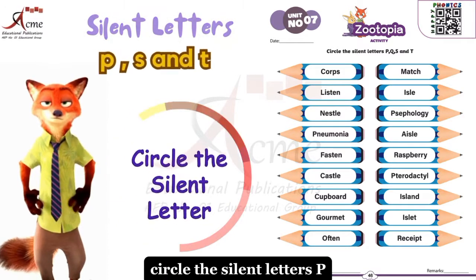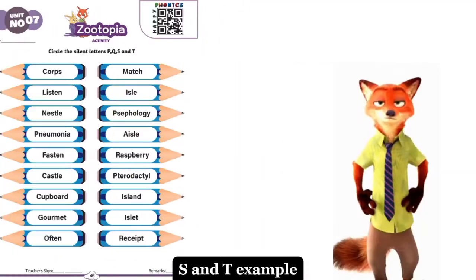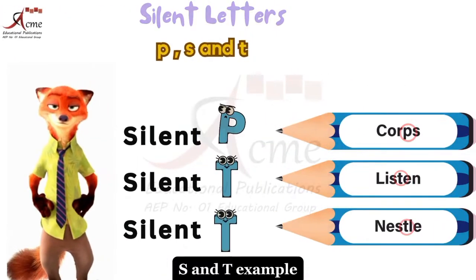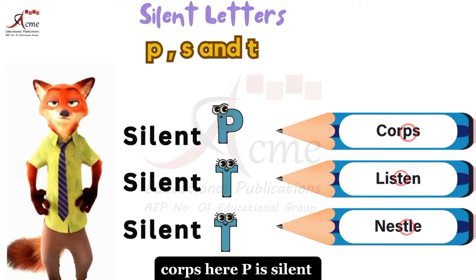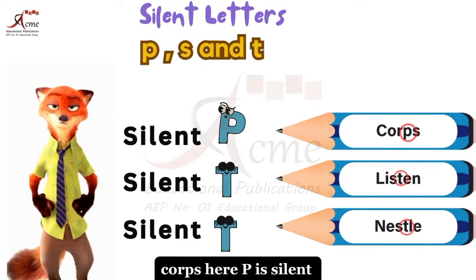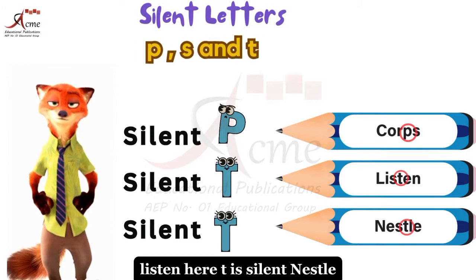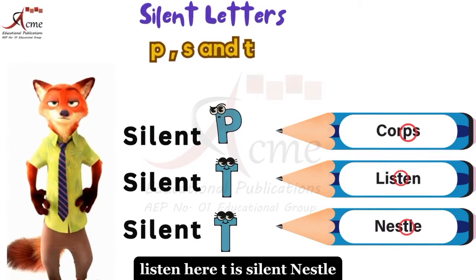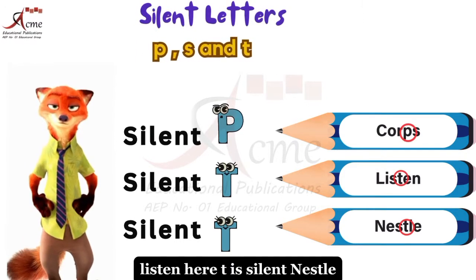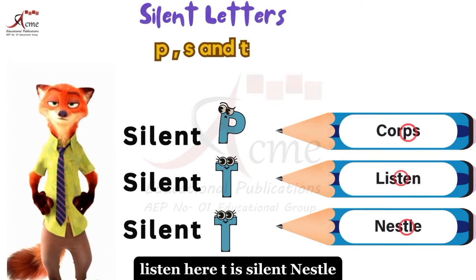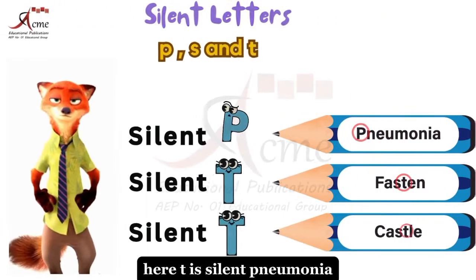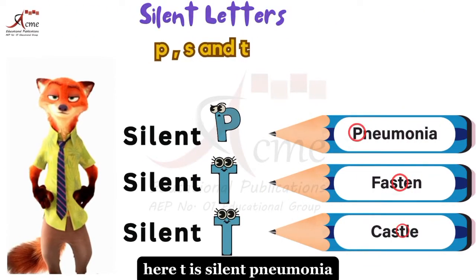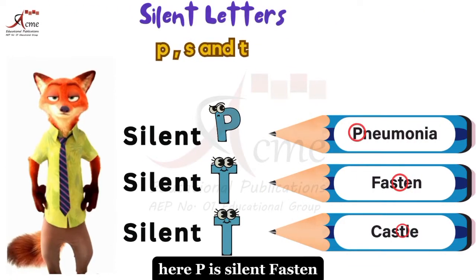Circle the silent letters P, S, and T. Example: Corp — here P is silent. Listen — here T is silent. Nestle — here T is silent. Pneumonia — here P is silent.